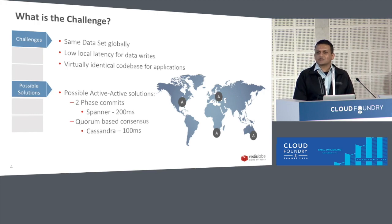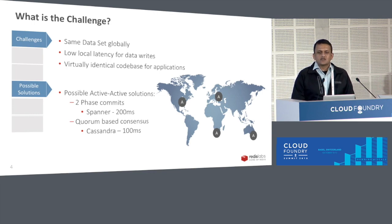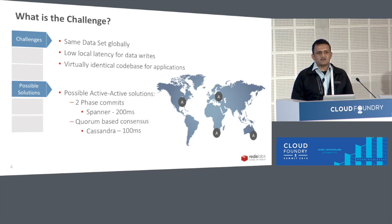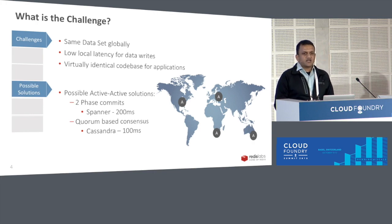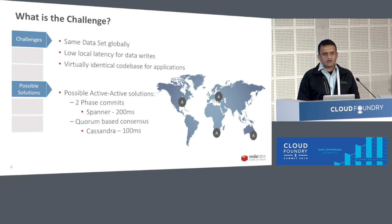There are two potential solutions you can leverage today in public clouds or on-prem. One of them is Google Spanner, which uses a two-phase commit approach. With this approach, what you gain is consistency, but the trade-off is that you're looking at at least 200 milliseconds or higher before your data gets synchronized.